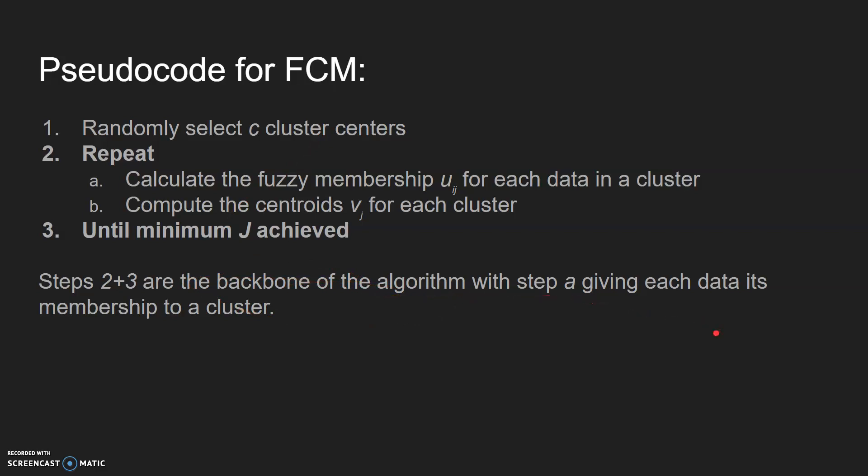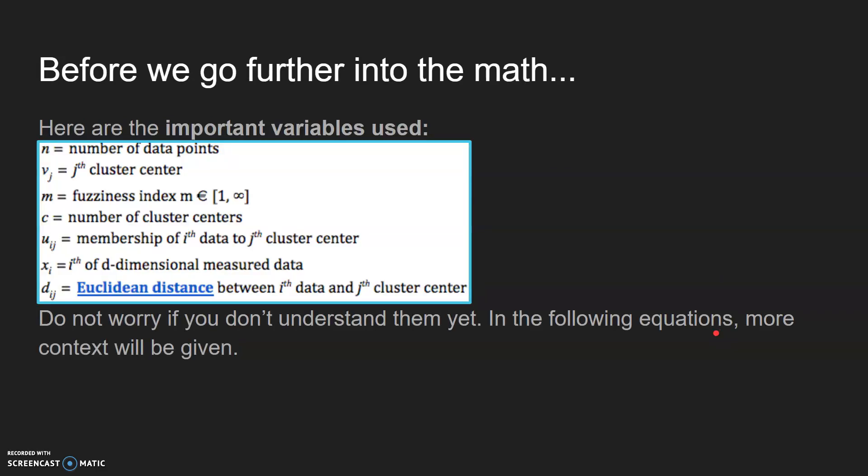Before we get into the math, here are some important variables used. N equals the number of data points, which can be randomized but can also be defined by the user. VJ is the Jth cluster center value.